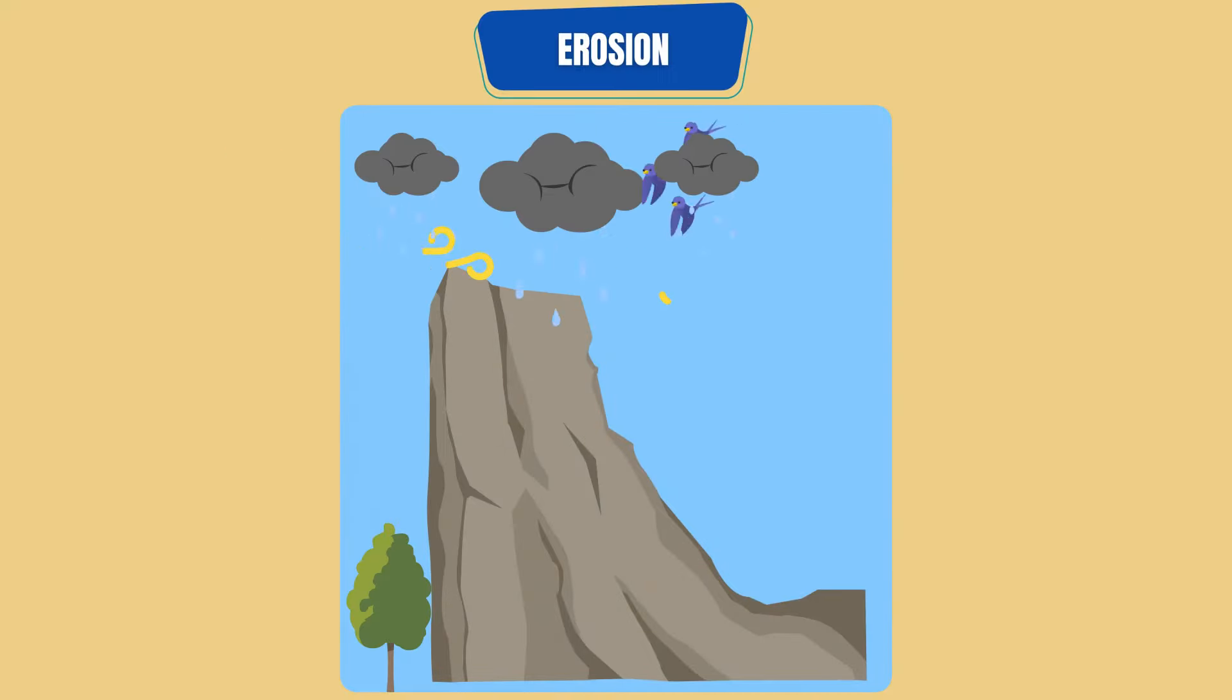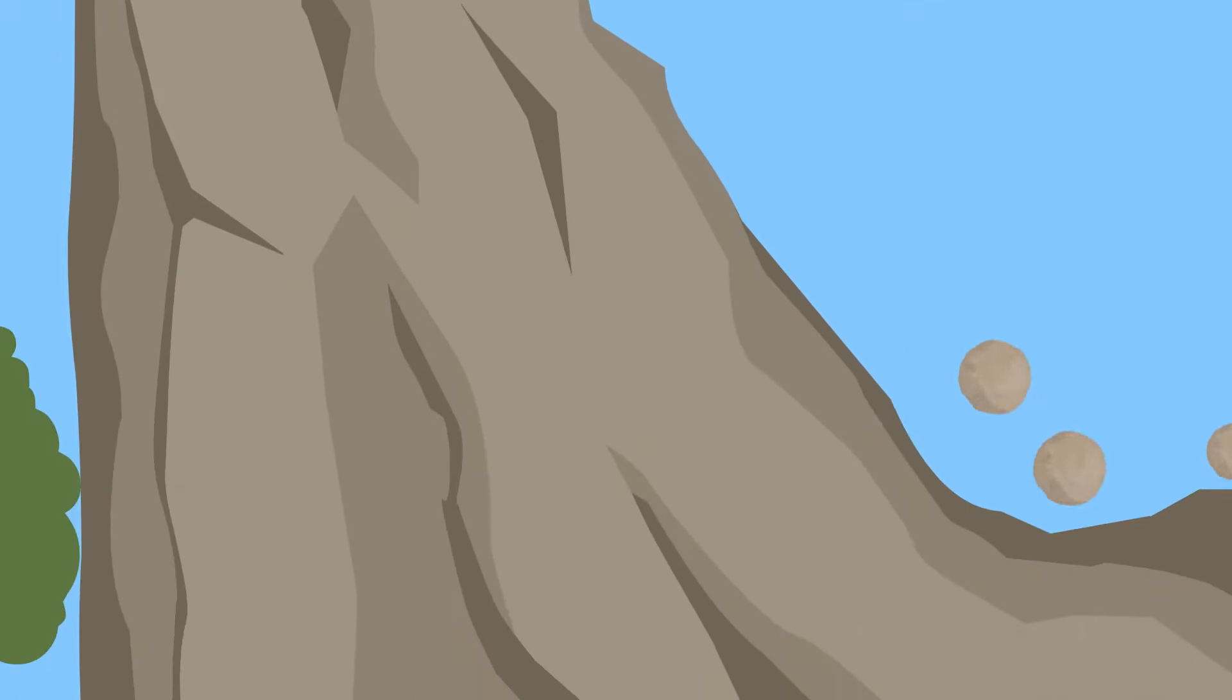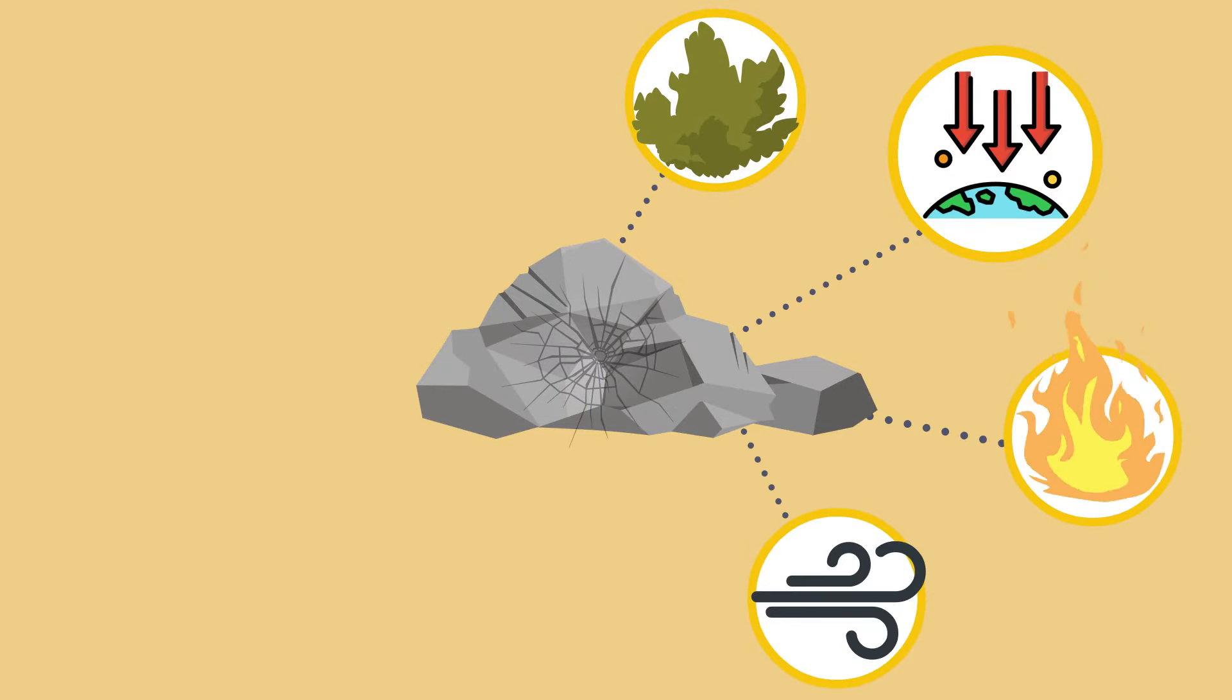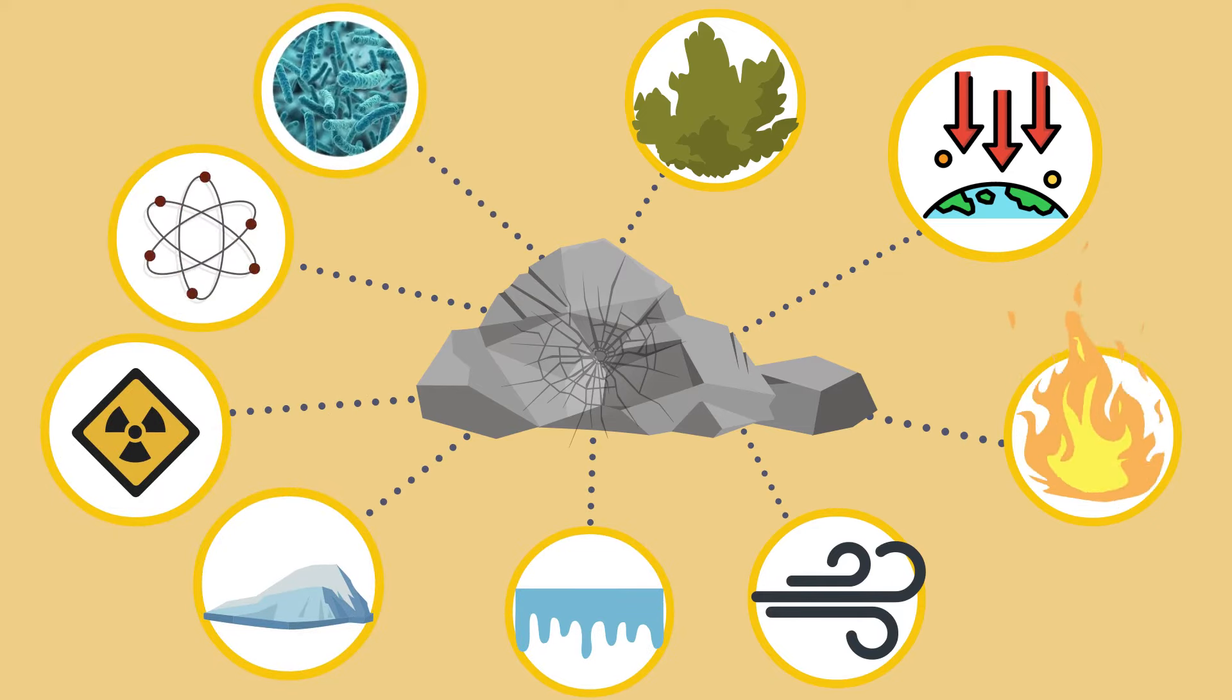Through the process of erosion, the weathered pieces of rock and other materials are moved to another place. Rocks are broken down by growing plants, gravity, heat, wind, water, ice, acid, oxygen, and living organisms.